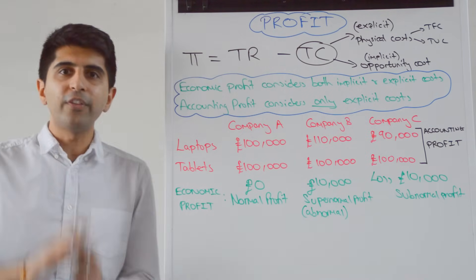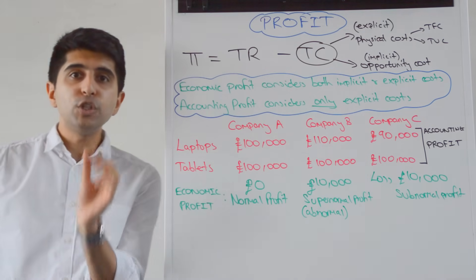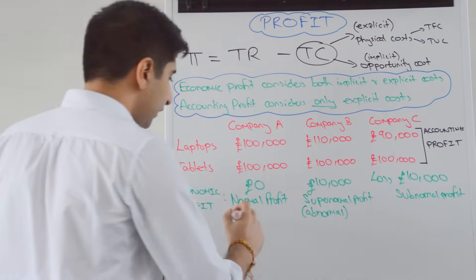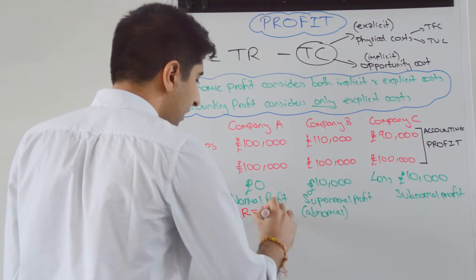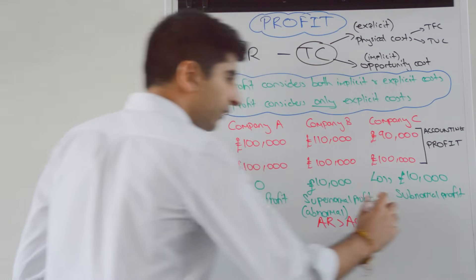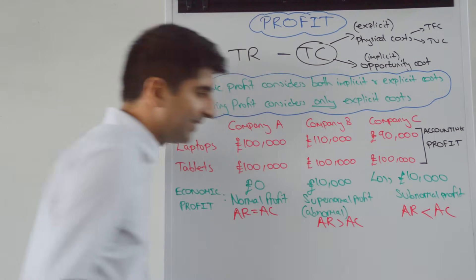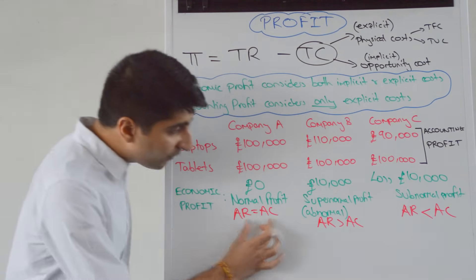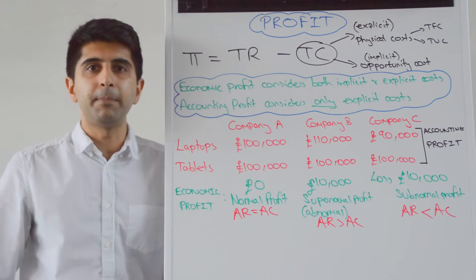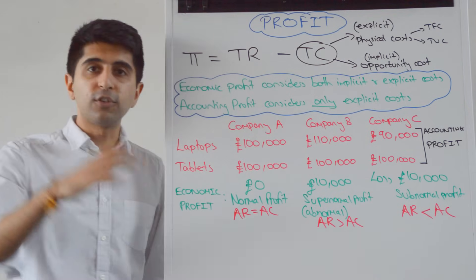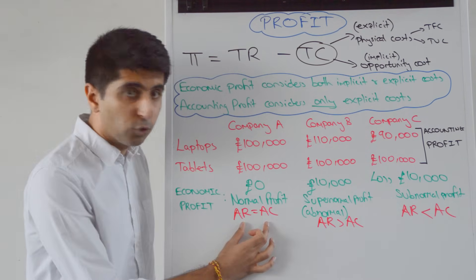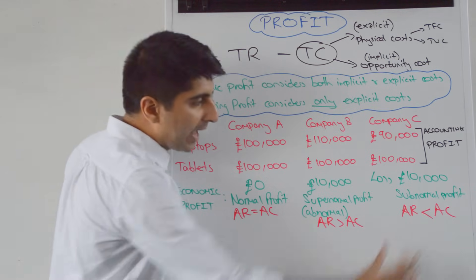The last thing you need to know are the conditions. On a diagram, how would you work out what kind of profit is being made? We look at average revenues and average costs. For normal profit, the condition is when AR equals AC. For supernormal profit, it's when AR is greater than AC. And for subnormal profit, it's when AR is less than AC. When we draw diagrams with market structures and work out the level of profits being made, we will always look for average revenues compared to average costs.